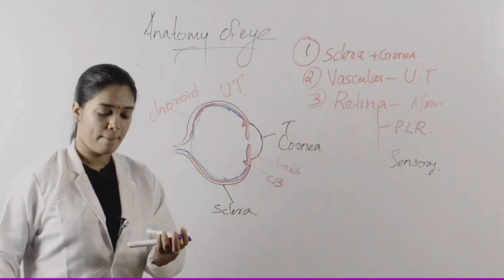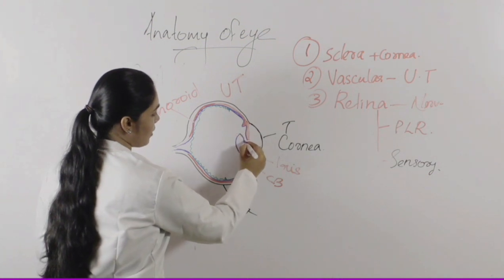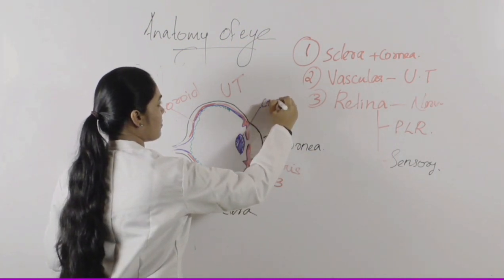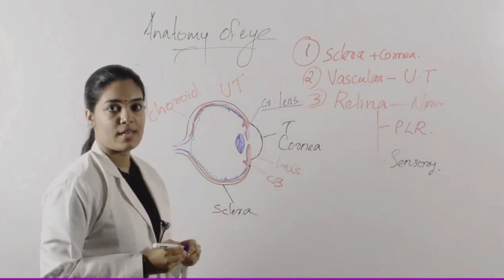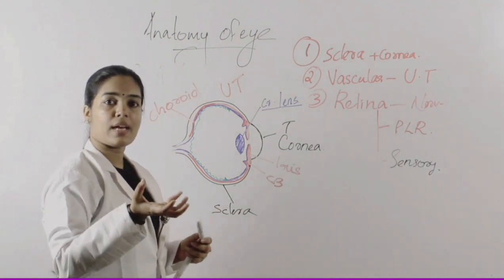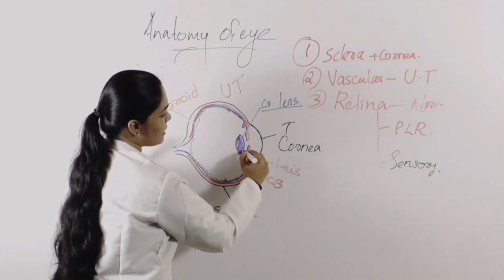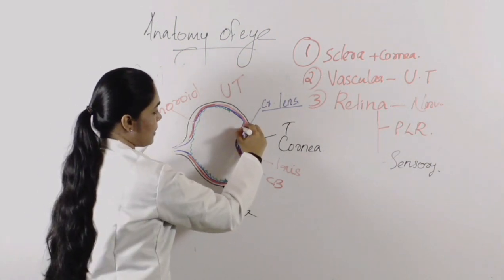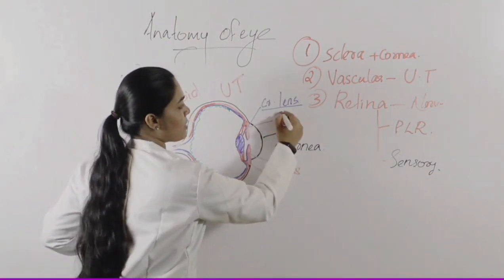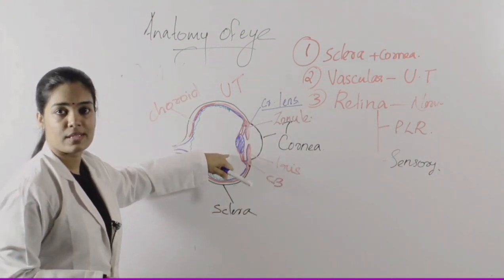Now we will study the internal structures. Here we have a structure known as the crystalline lens — it is a major part of the eye, lying behind the iris. It can't stand there by itself, so a suspensory ligament connects the lens to the ciliary body. This suspensory ligament is known as zonules. The zonules hold the lens in its correct position.